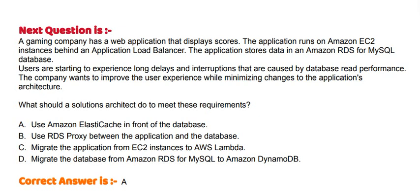Option A: Use Amazon ElastiCache in front of the database. Option B: Use RDS Proxy between the application and the database. Option C: Migrate the application from EC2 instances to AWS Lambda. Option D: Migrate the database from Amazon RDS for MySQL to Amazon DynamoDB.